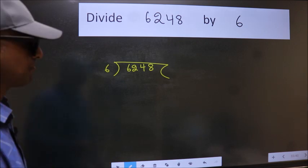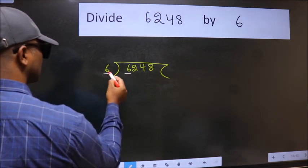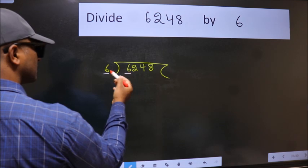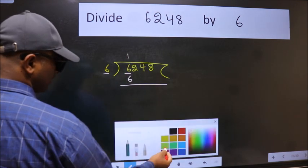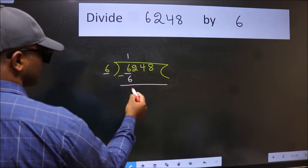Next, here we have 6 and here 6. When do we get 6 in the 6 table? 6 once is 6. Now, we should subtract. We get 0.